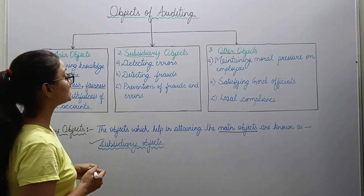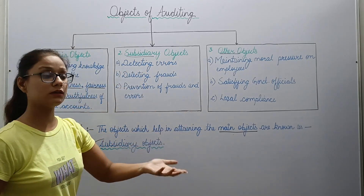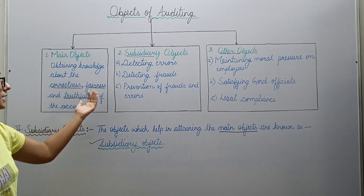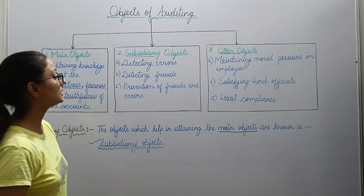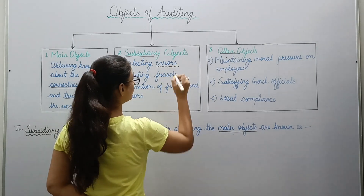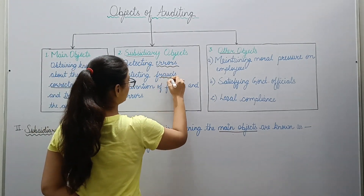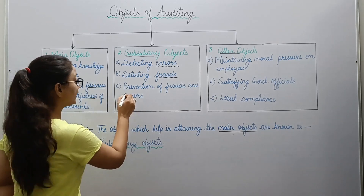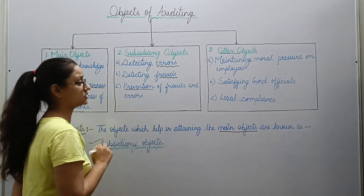Under subsidiary objectives, how do you help check that there is correctness, fairness, and truthfulness? You check whether there are any errors in your accounts, whether there is any fraud in your accounts, and if yes, how to prevent that.